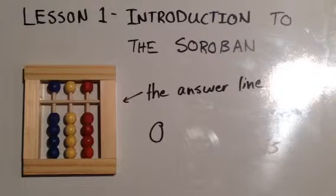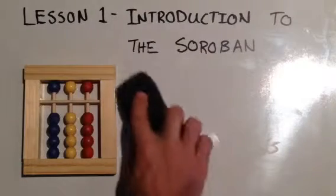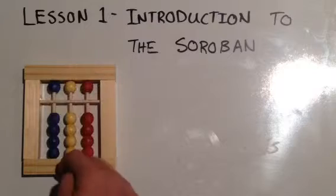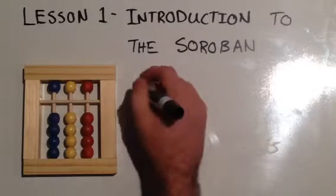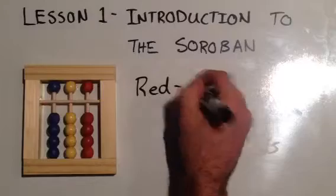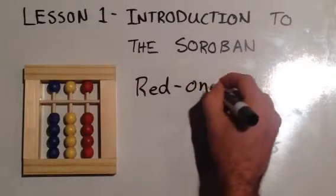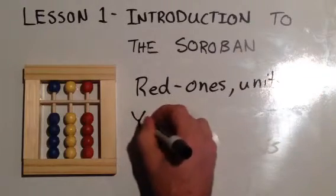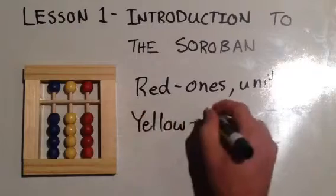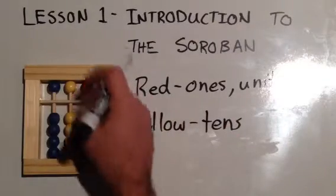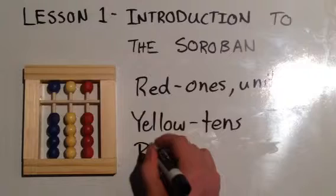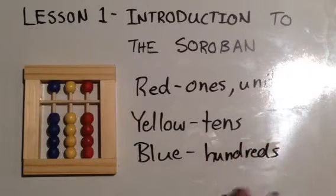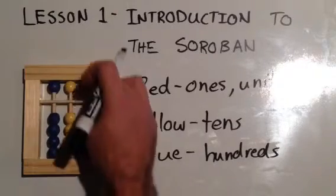Let's now look at the columns. This abacus has three columns: the red column, the yellow column, and the blue column. The red represents the ones or the units, the yellow represents the tens, and the blue represents the hundreds. So the blue is the hundreds, the yellow is the tens, the red is the ones.